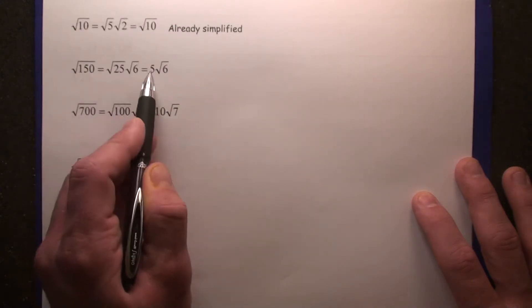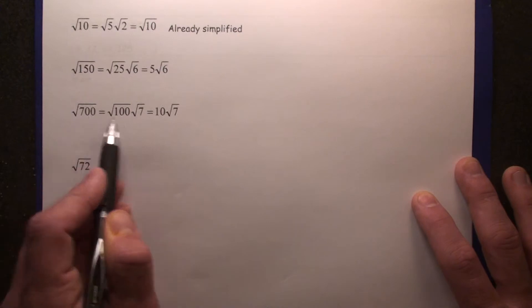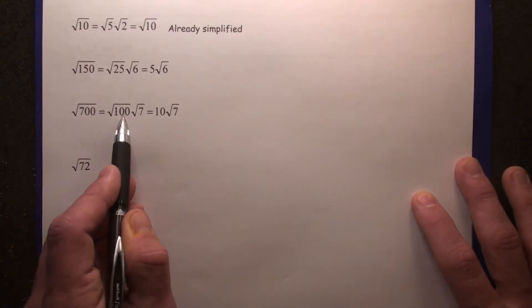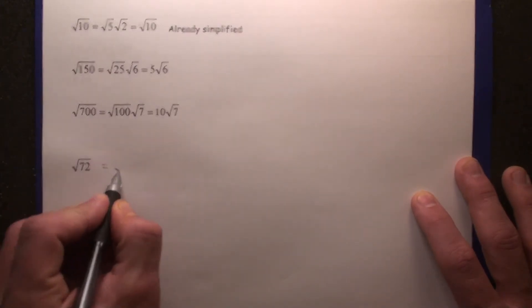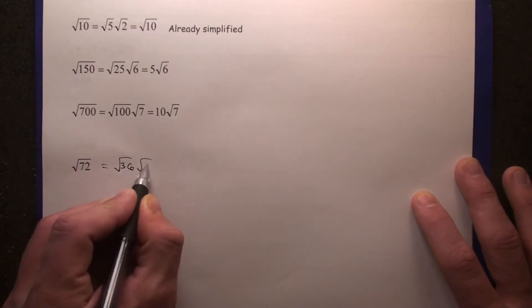Square root of 25: 25 is a perfect square. Root 700 is 10 root 7 because of the square root of 100. Square root of 72, you're going to use 36 times 2.